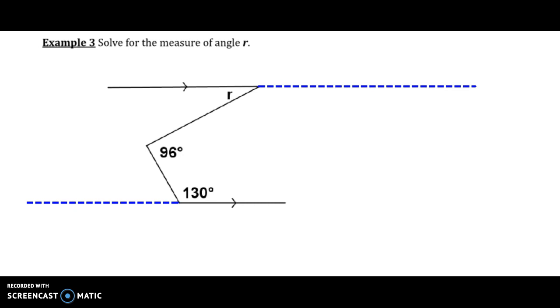Solve for the measure of angle R. Notice R is not in the same place as the previous two examples that we've gone over. It doesn't indicate to use auxiliary lines, but that's what we're going to use here.